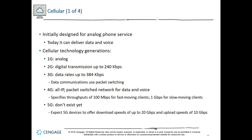5G is now here. Download speeds are projected up to 20 Gbps and upload speeds up to 10 Gbps — though these are currently theoretical throughputs. The challenge with high-band 5G is that it requires more towers because it doesn't transmit as far. With medium and lower bands, we can still get extremely high throughput with towers further apart.